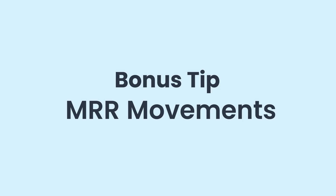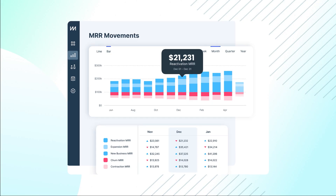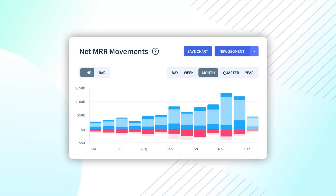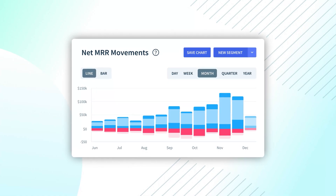Another thing I want to talk about is MRR movements. This isn't necessarily a metric, but it's a really useful way to understand your business. The key MRR movements are: new business MRR, expansion MRR, contraction MRR, churn MRR, and reactivation MRR. This breaks down the changes in MRR over time, and when you put it together in a chart it allows you to really understand the dynamics of your SaaS business — what's causing your MRR to go up or down? Is it lower churn, more new customers, more reactivations? One of my favorite charts in ChartMogul is the MRR movements chart combined with the high-level ARR chart.